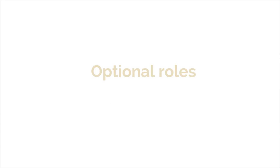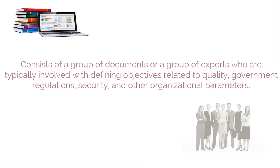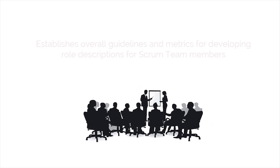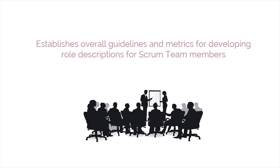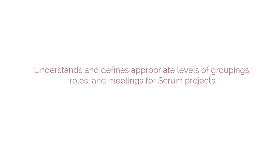So let's get started with the Scrum Guidance Body, or SGB. It has an optional role. It generally consists of a group of documents or a group of experts who are typically involved with defining objectives related to quality, government regulations, security, and other organizational parameters. The Scrum Guidance Body establishes overall guidelines and metrics for developing role descriptions for Scrum team members. It acts as a consultant to projects across organizations at different levels. It also understands and defines appropriate levels of groupings, roles, and meetings for Scrum projects.